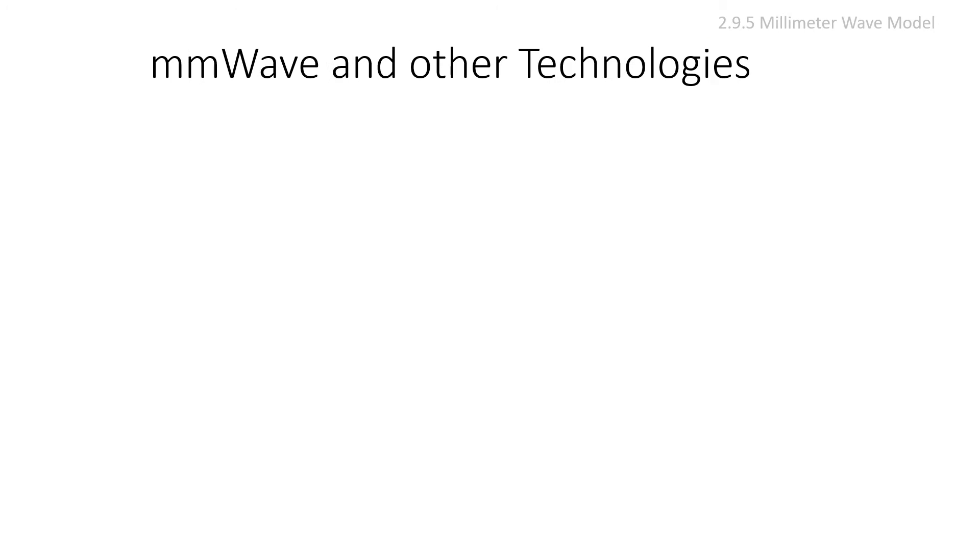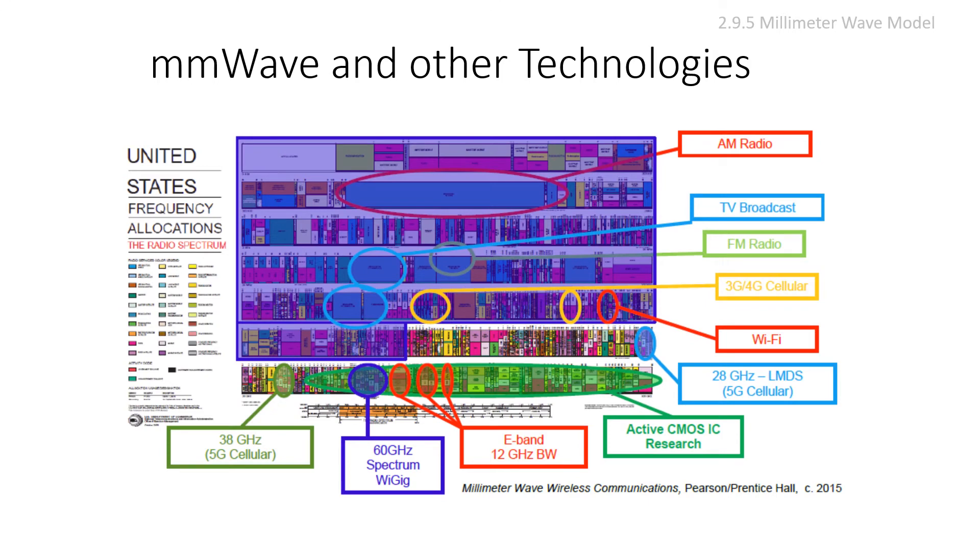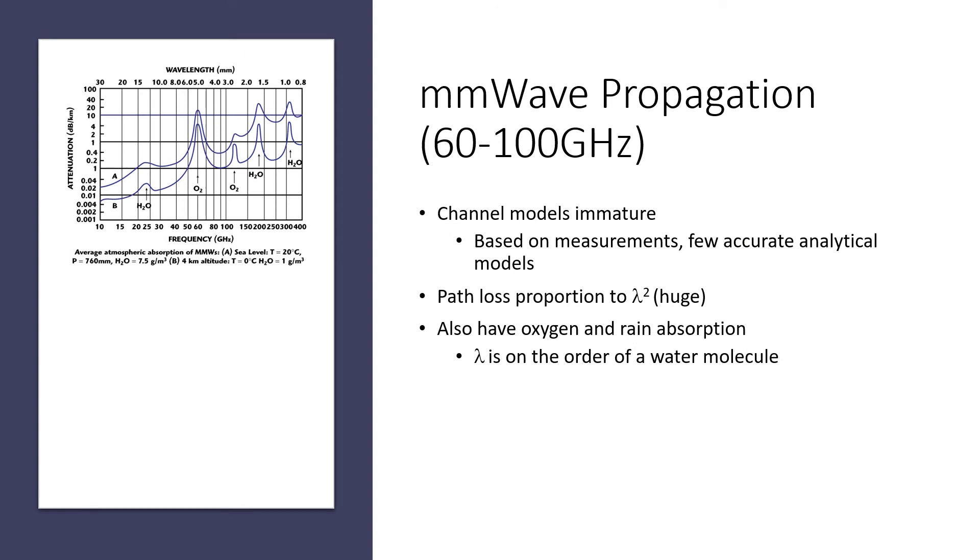Looking at the spectrum, which is widely crowded, there are different technologies including 5G cellular and 60 GHz spectrum. Changes in bandwidth result in changes in frequency. Section 2.9.5 discusses millimeter wave models. All existing commercial systems fit into a small fraction of this millimeter wave band. For high frequency, we're interested from 60 to 100 GHz.